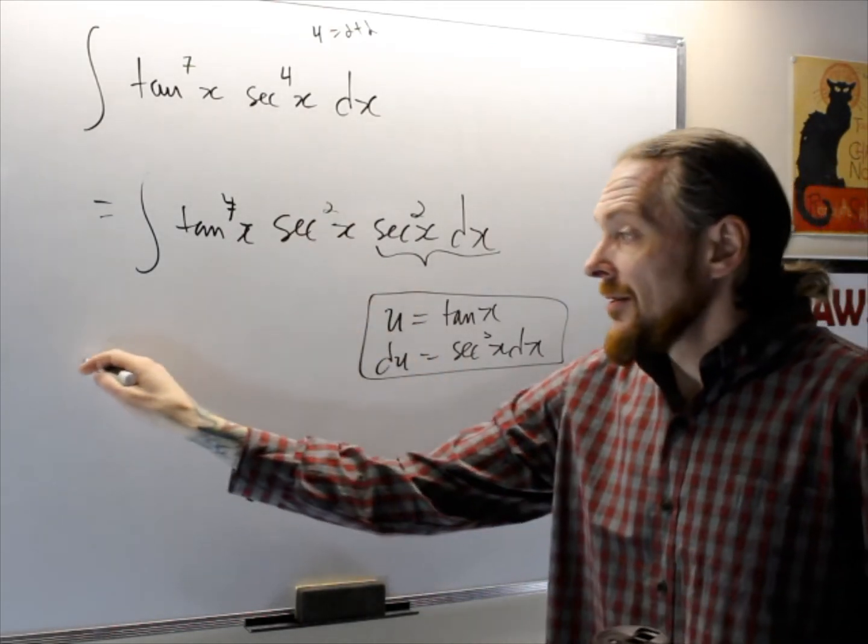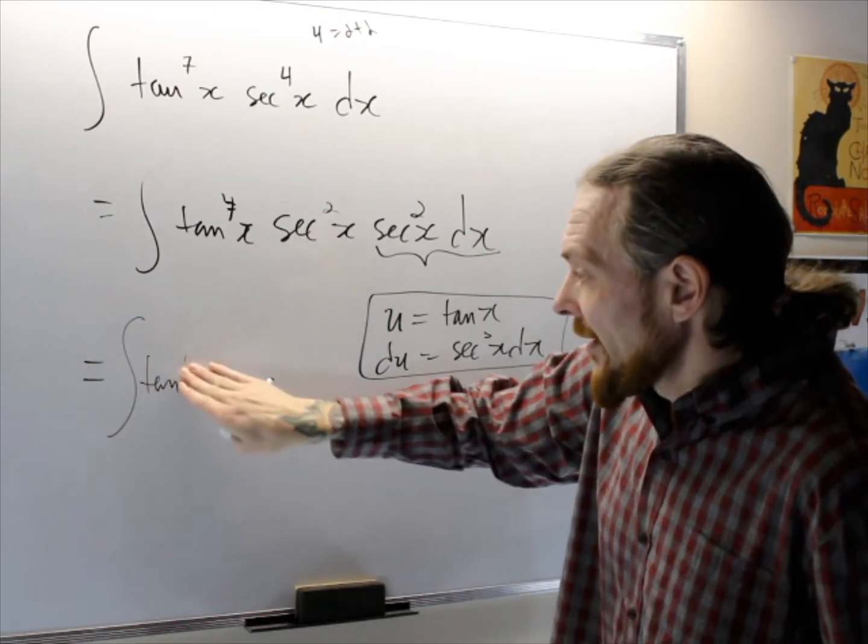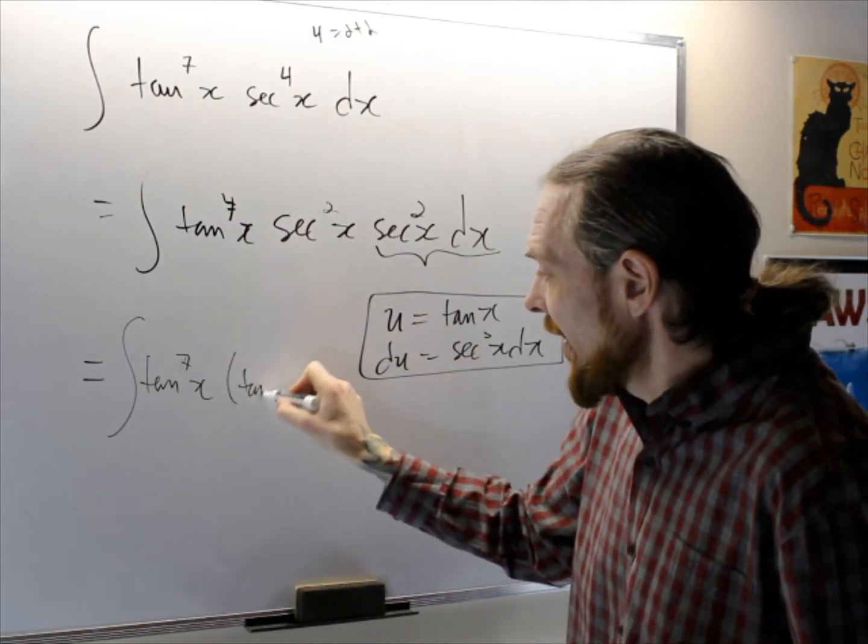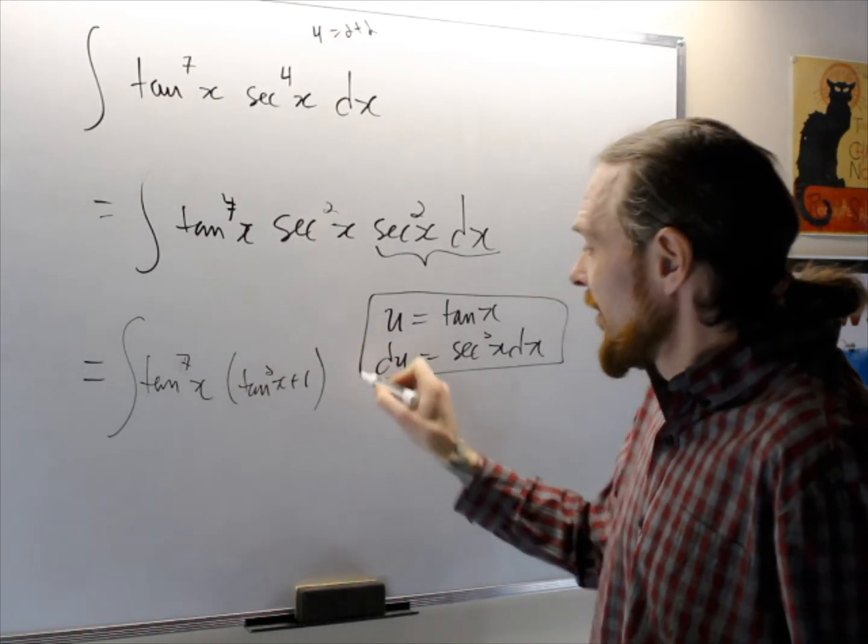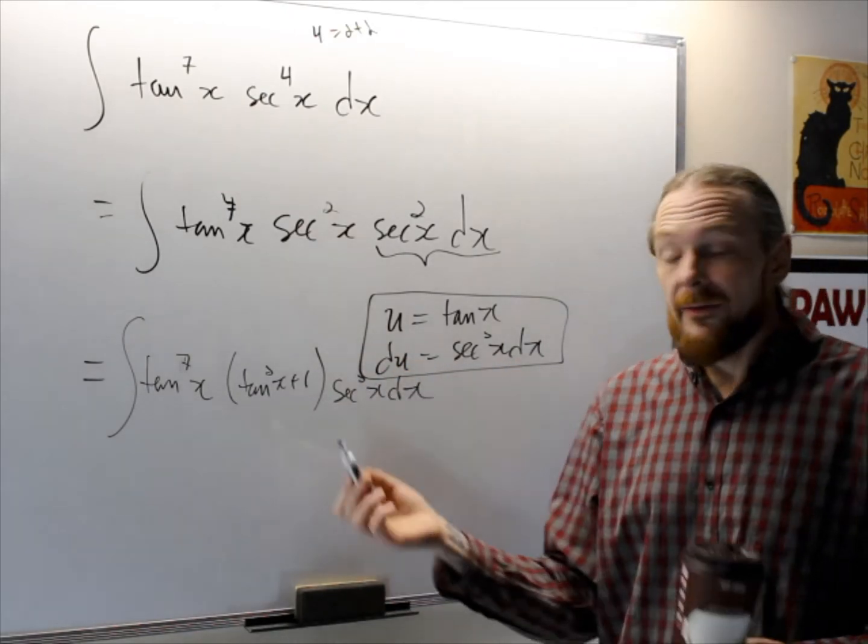Immediately then, because I have tans, I want to get rid of the secants, so I use the trigonometric identity and I get tan to the seven x times tan squared x plus one times secant squared x dx. Now I have a full substitution.